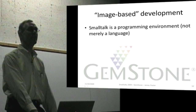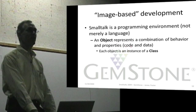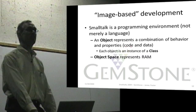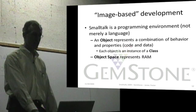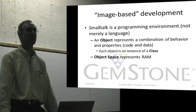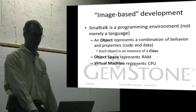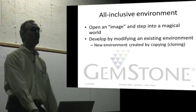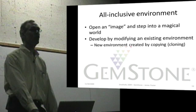With Smalltalk and image-based development, the object represents the combination of behavior and properties — code and data. The object space is where we interact with objects in RAM, while the image refers to where things are saved on disk when not in use. It's an all-inclusive environment where you modify an existing system and the environment contains your tools. Everything is an object — a simple, elegant language with powerful class libraries.